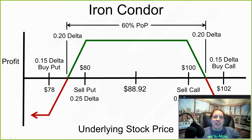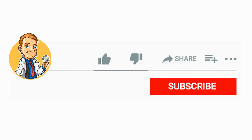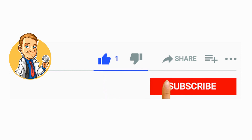That's it for this video. Join me in the next part where I talk about risk-reward ratio and IV mean reversion, so you can really identify good credit spreads. If you want to see more videos in this series, make sure you click the like and subscribe buttons below.